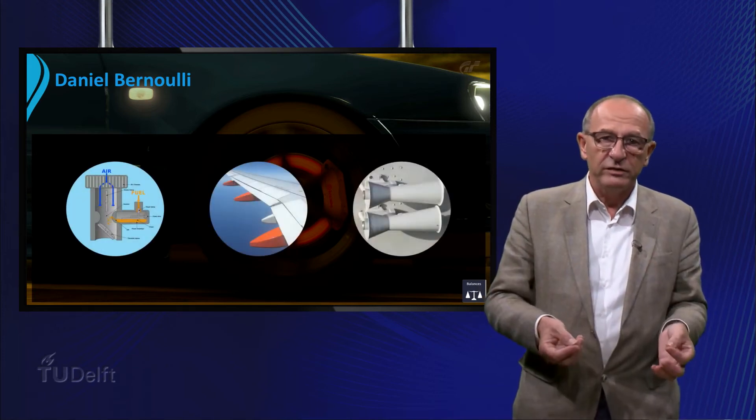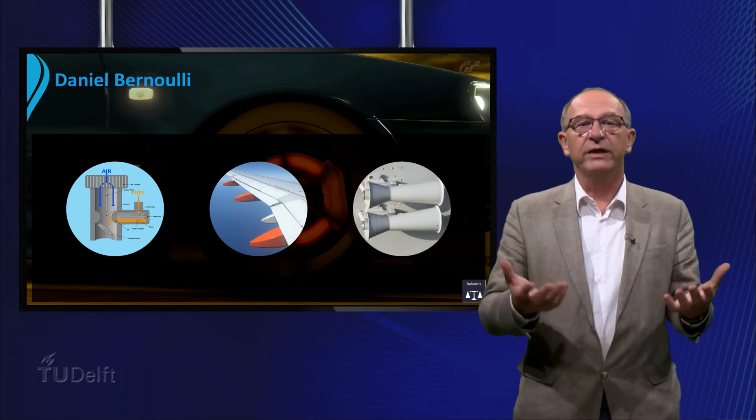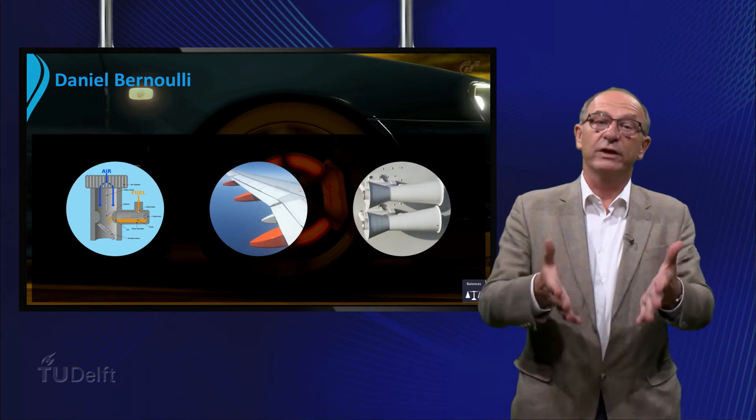Examples include the so-called carburetor, wings of airplanes, mass flow measurement devices, and it also explains the phenomena demonstrated in our spark.